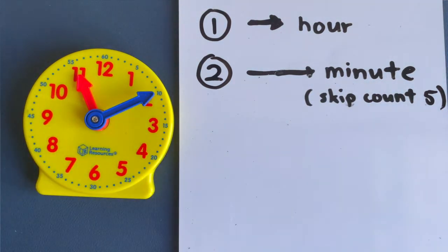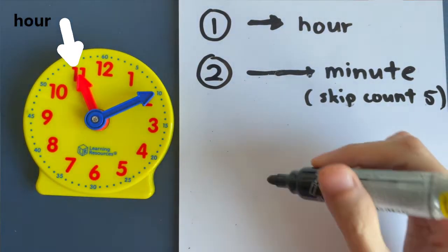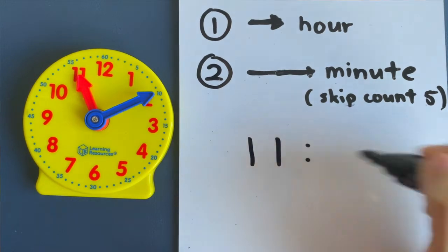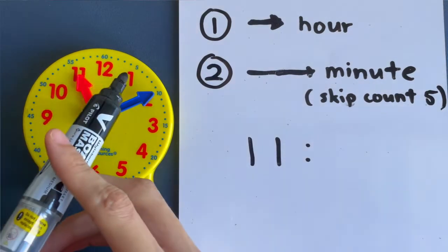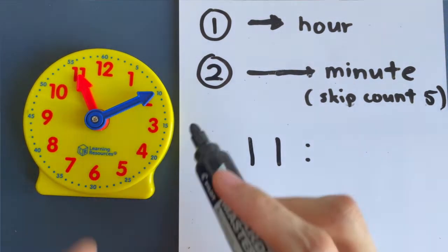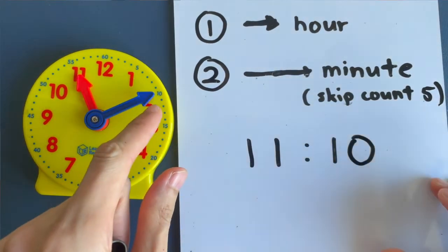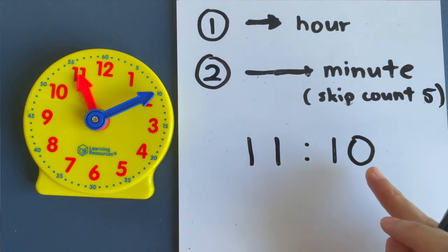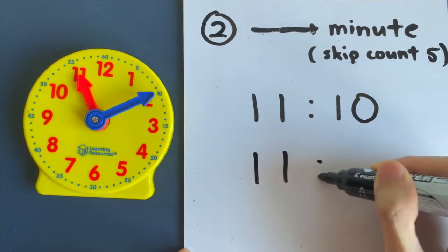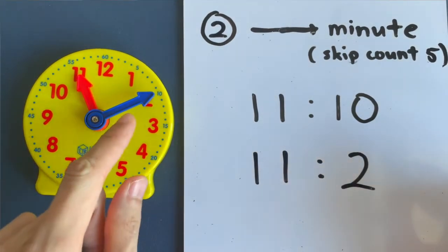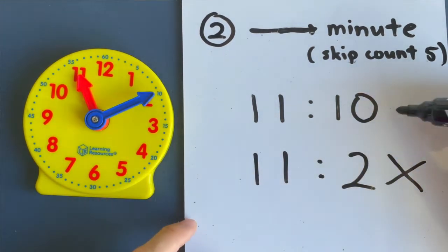Look at this first example. What time is it? First step: look at the hour hand — it's pointing at 11, so let's write down 11. Second step is a little more tricky: you have to skip count in fives. 5, 10 — stop. We stop at where the minute hand is and read off the number: 10. So the time is 11:10. Be careful not to make the mistake of writing 11:2. That's wrong because you did not skip count in fives. 11:2 is wrong — it's 11:10.